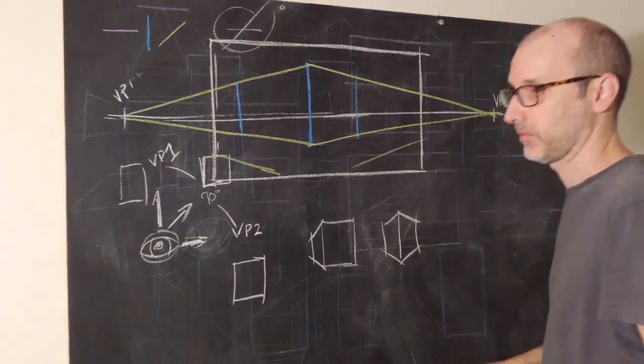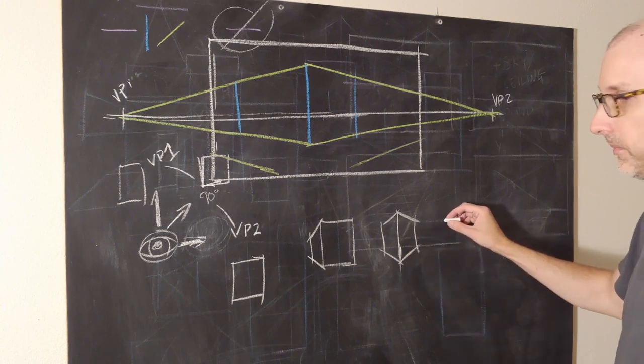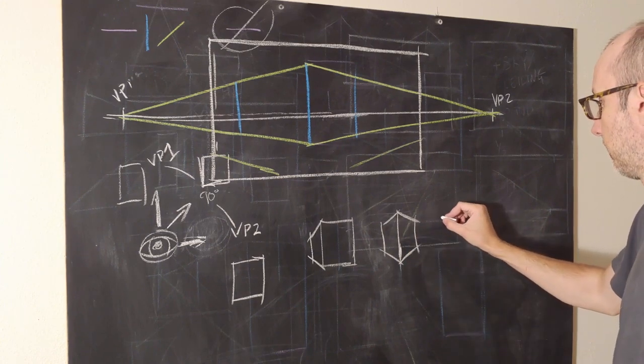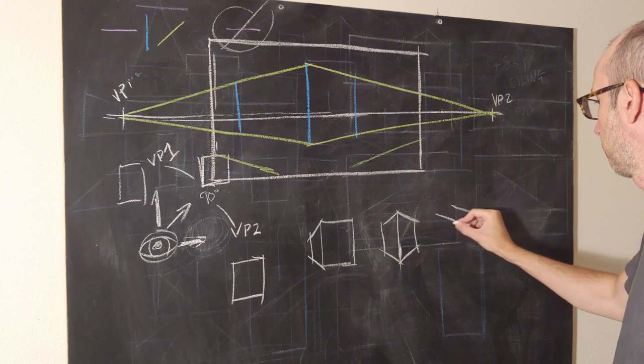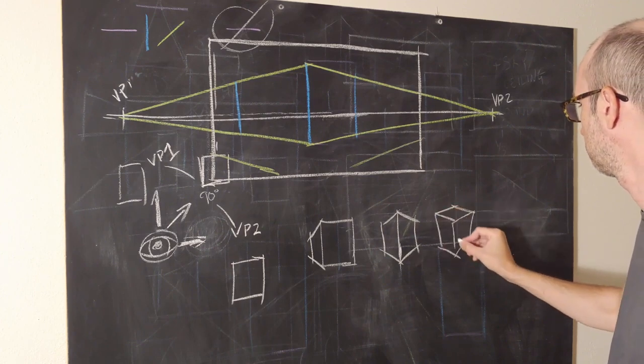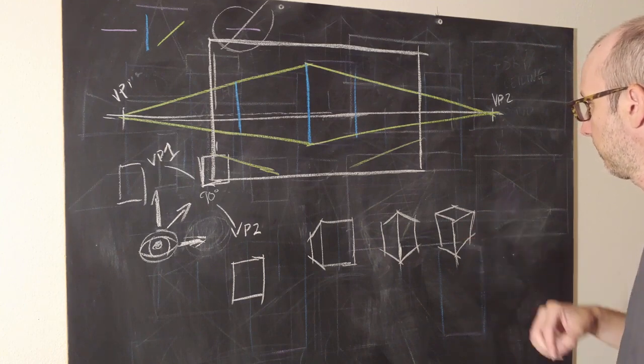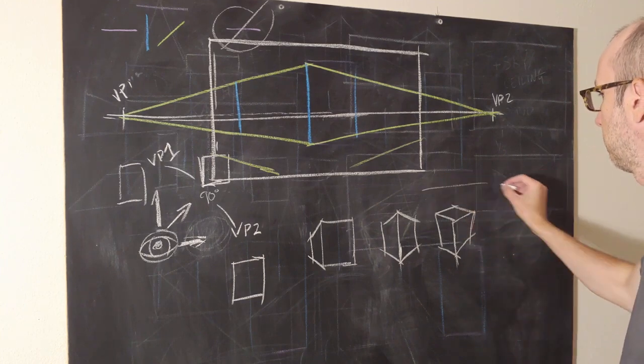This is why just simple box drawing is so important because it makes this a lot easier. And then the other thing too is we've got our three-sided box, and we're still in two point. We're just looking down, so the horizon line is somewhere over here.